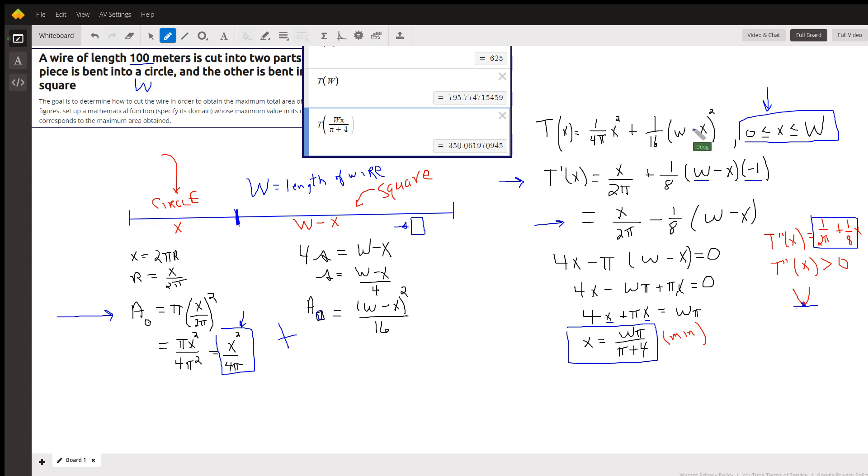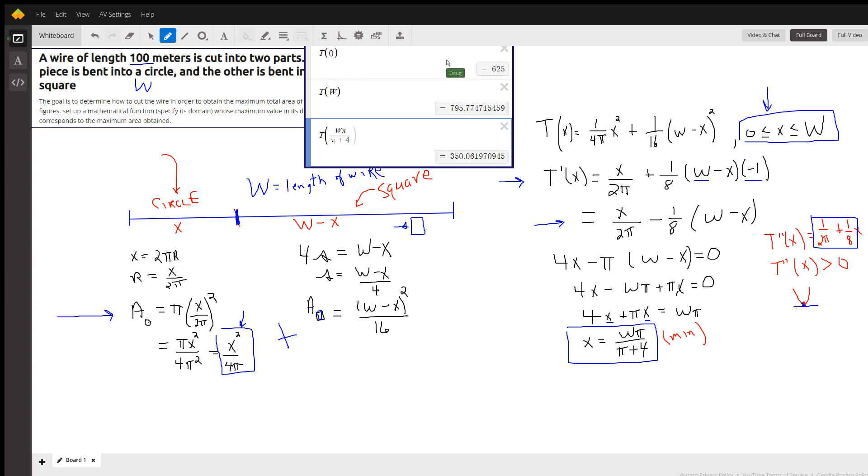And now if we want to find out what happens when x is zero or when x is equal to w, we have to substitute those expressions into the function. It turns out T of 0 is 625, T of w is 795, and T of that critical number is 350.